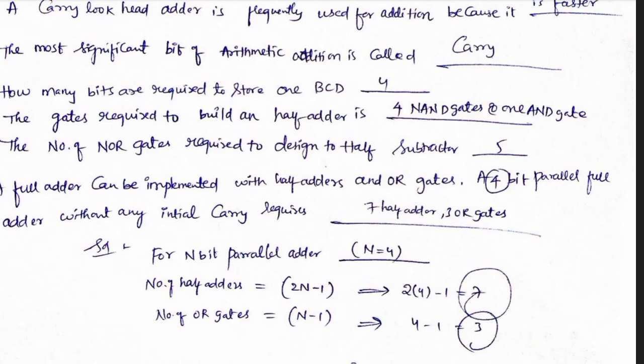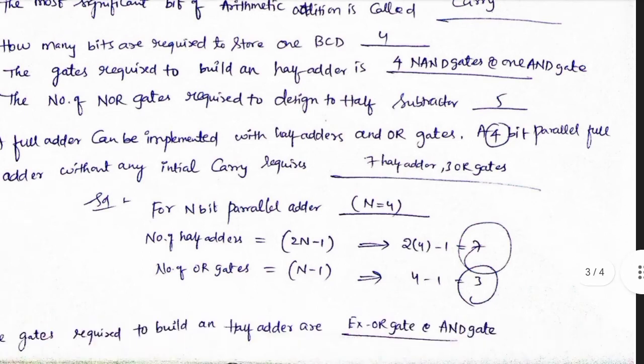A full adder can be implemented with half adders and OR gates. A 4-bit parallel full adder without any initial carry requires 7 half adders and 3 OR gates. If you have to find the 4-bit parallel adder, n is equal to 4. The number of half adders is 2n-1, that means 7. The number of OR gates is n-1, that means 3.